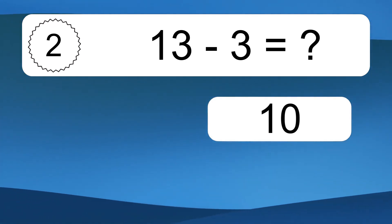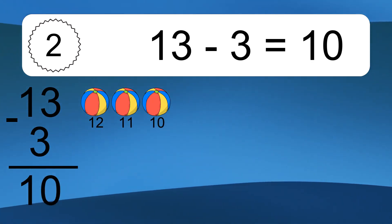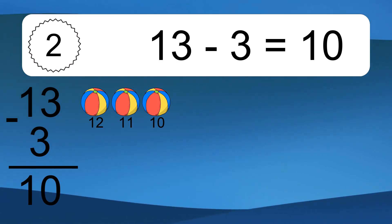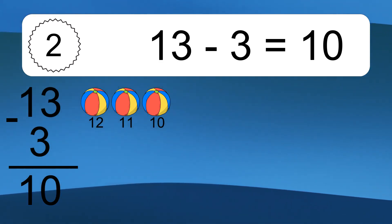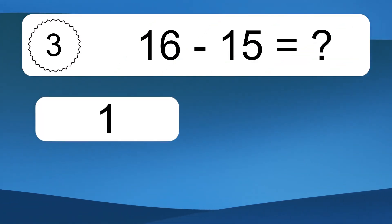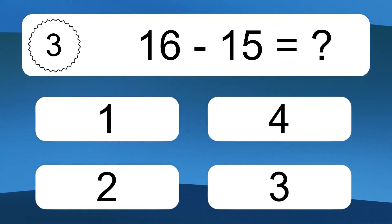13 minus 3 equals what? 13 minus 3 equals 10. Let's count it: 12, 11, 10.